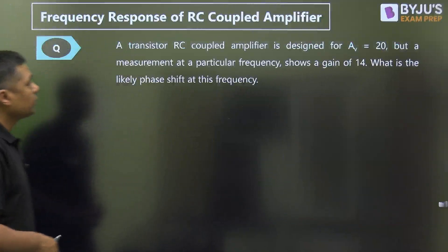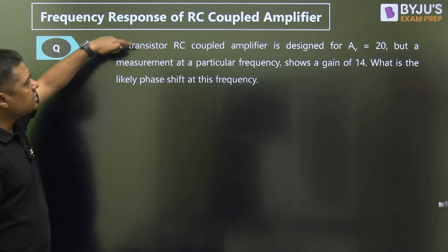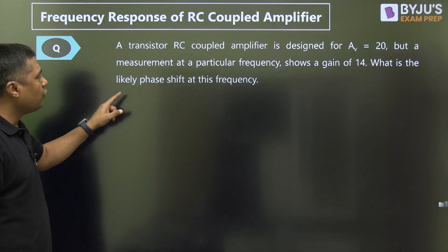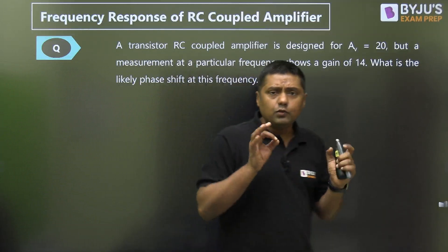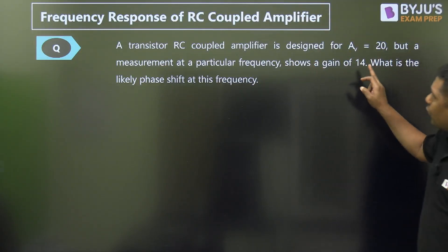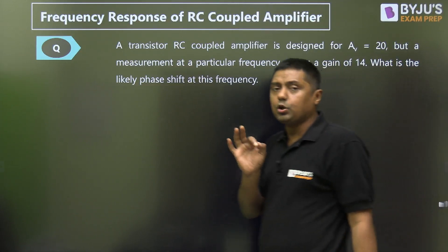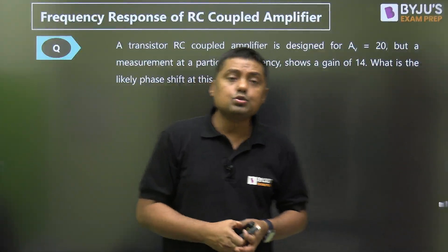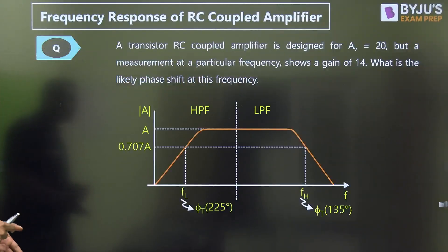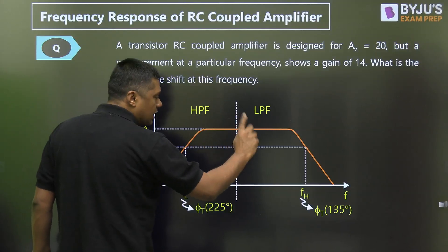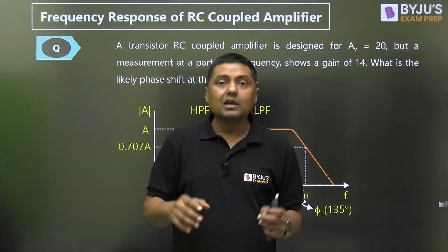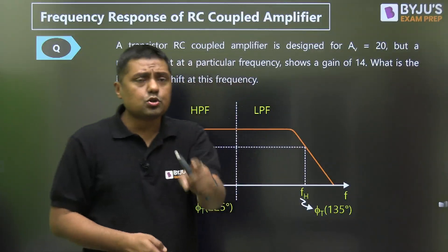Example question: A transistor RC coupled amplifier is designed for a gain A_V = 20, but a measurement at a particular frequency shows a gain of 14. What is the likely phase shift at this frequency? The mid-band gain is 20. A gain of 14 is 70% of 20, which equals (1/√2) × 20, meaning measurement is being taken at either the lower or upper cut-off frequency. Therefore the likely phase shift is either 135° or 225°.